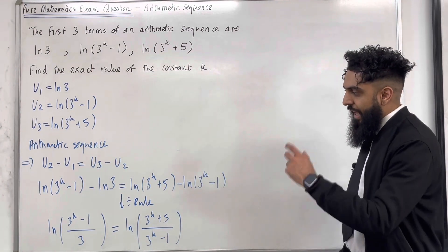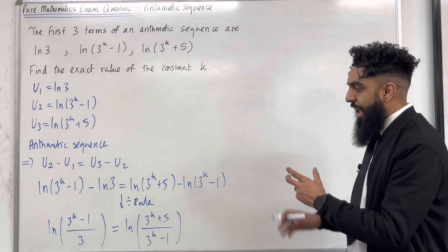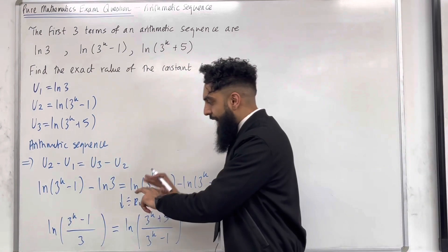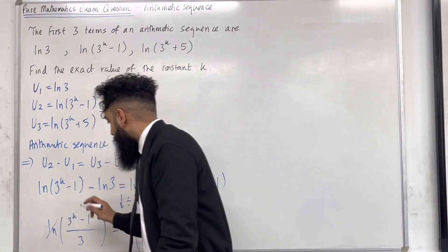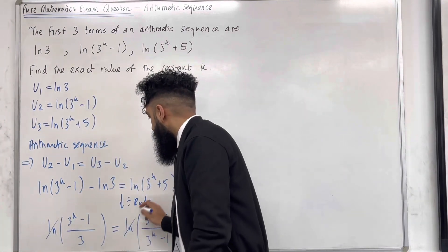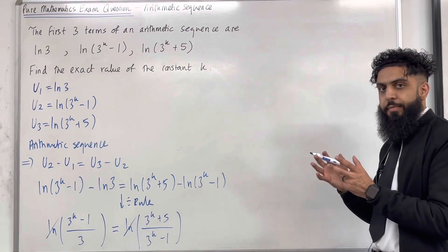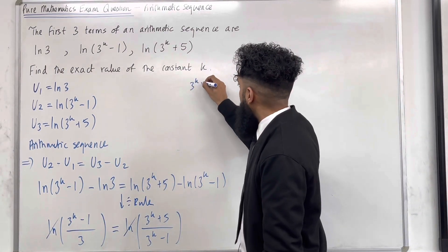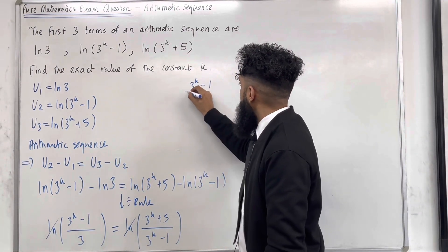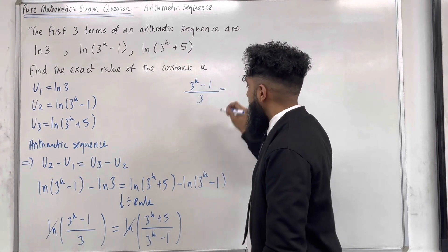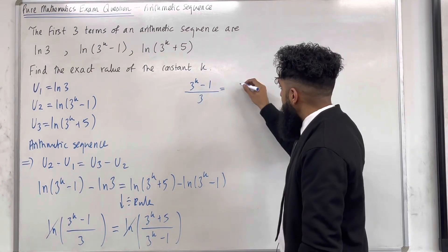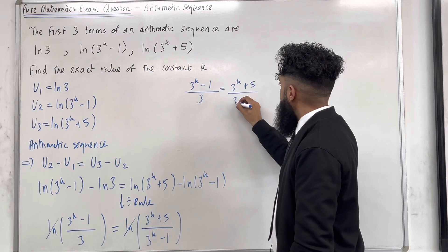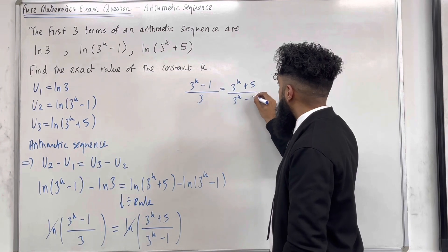We've got ln of something equal to ln of another thing. Because the two expressions are equal, we can cancel out the natural logs, giving rise to the exponential equation: (3 to the power k minus 1) over 3 equals (3 to the power k plus 5) over (3 to the power k minus 1).